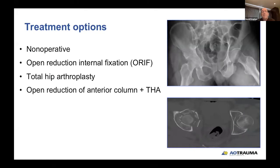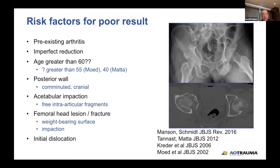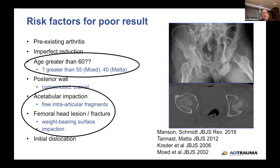Treatment options range from non-operative to open reduction internal fixation — usually the default — and in a small percentage you may consider a primary total hip either with or without ORIF of the anterior column. Decision-making involves patient factors, surgeon factors, and fracture characteristics. We know from studies by Letournel, Joel Matta, and others that significant risk factors for poor results include age greater than 60. The two key concerns with this subtype are acetabular impaction with free intra-articular fragments and femoral head involvement.